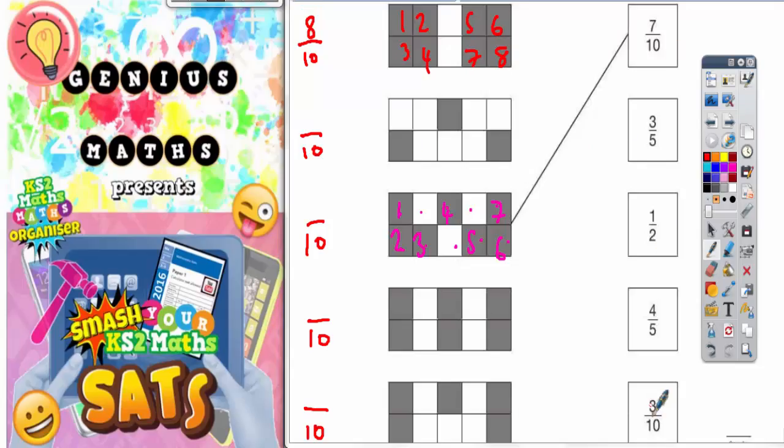Now 8 out of 10 isn't any of the options. But remember you can simplify this 8 out of 10. If you divide both the top and the bottom by 2, half of 8 is 4 and half of 10 is 5. So 4 out of 5, 4 fifths is worth the same. It is an equivalent fraction to 8 out of 10. So 4 fifths is the one that we need to join this shape to which is down here. So that one is going to get joined to 4 fifths.